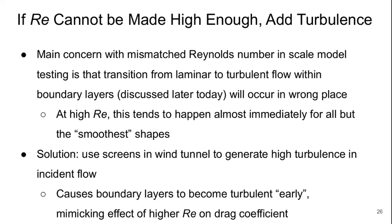And if the Reynolds number can't be made high enough, we need to add turbulence. So, the main concern if the Reynolds numbers are mismatched in the scale model test is that the transition from laminar to turbulent flow within the boundary layers, which is something we'll discuss later today, will happen at the wrong place. At very high Reynolds numbers, that transition tends to happen almost immediately for all but the very smoothest of shapes. And so, the solution if the lower Reynolds number you might need in a wind tunnel is to use screens or other sort of blockages in the flow to generate high turbulence before the flow gets to the car. This tends to cause the boundary layers to become fully turbulent quite early and it mimics, but does not exactly match, the effect of higher Reynolds number on the drag coefficient.